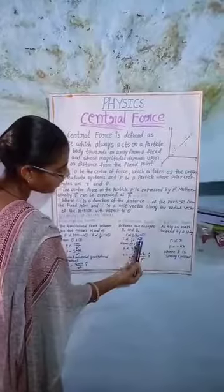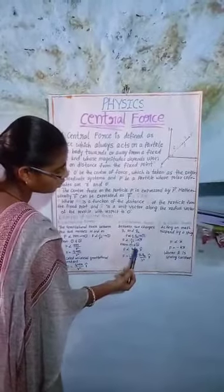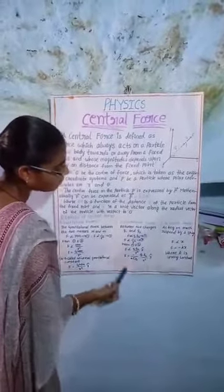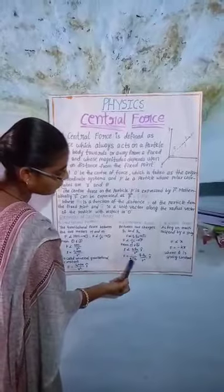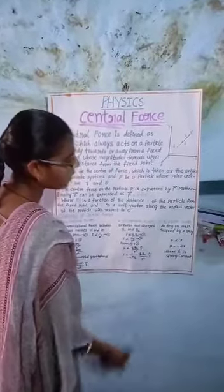Then from equations one and two, we have F proportional to Q1 Q2 by R squared. Finally F equals 1 by 4 pi epsilon naught Q1 Q2 by R squared into R cap.